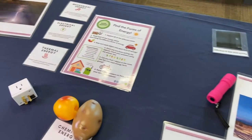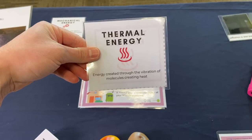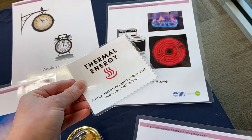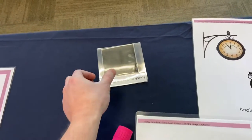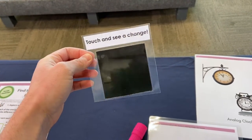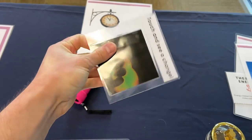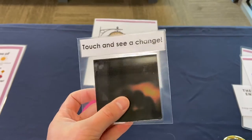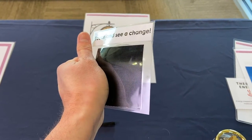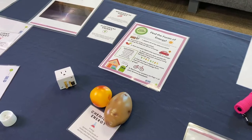Next, let's go with thermal. Thermal would be energy created through the vibration of molecules creating heat. We've got the kitchen stove — I would say this is thermal energy. And what is this little guy over here? We get to play with this fun little item right here. Touch and see a change — what do we expect will happen? This is a thermal sensitive paper inside of here, and as you can see it changes colors with temperature. That is clearly a sign of a thermal reaction, thermal energy.